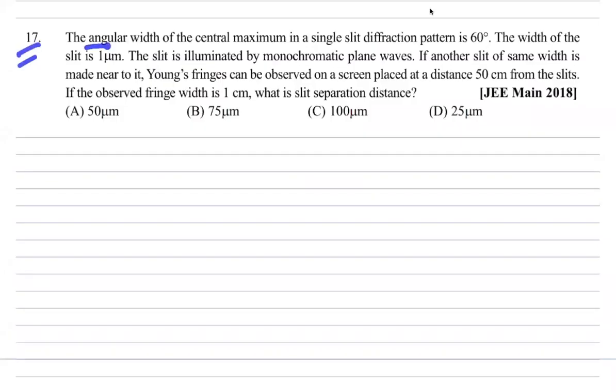Question number 17: The angular width of central maxima in a single slit diffraction pattern is 60 degrees. The width of the slit is given. The slit is illuminated by monochromatic plane waves. If another slit of same width is made near to it, Young's fringes can be observed on a screen placed at a distance 50 centimeter from the slits.